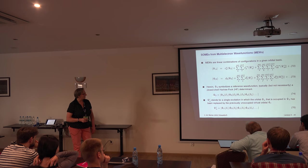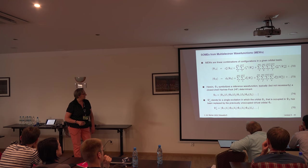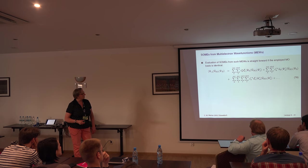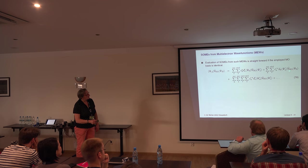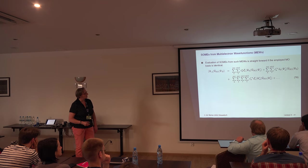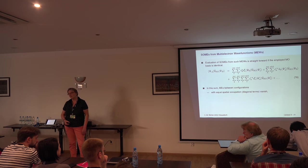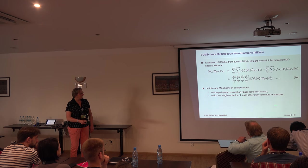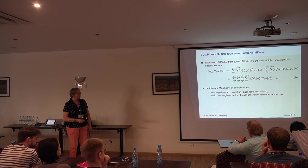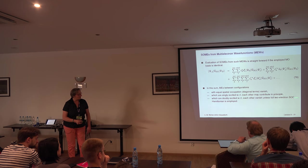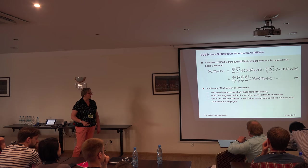These are single and double replacements from the ground-state Fock determinant with orbitals ABCD occupied. A single replacement takes one electron from orbital A and puts it into orbital R, and so on. To calculate the spin-orbit coupling you couple single excitations to your ground-state wave function. Matrix elements between configurations with equal spatial occupation — the diagonal terms — vanish. You get large interactions for singly excited states, while doubly excited states vanish unless you include the full two-electron spin-orbit coupling.